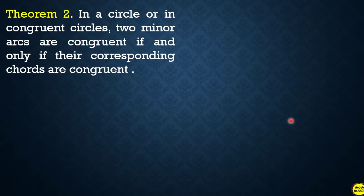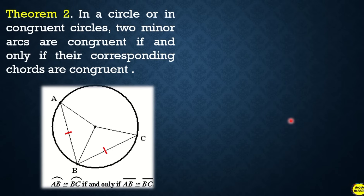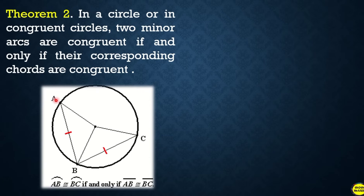For theorem number two: in a circle or in congruent circles, two minor arcs are congruent if and only if their corresponding chords are congruent. For example, if chord AB is equal to chord BC, then arc AB and arc BC are also equal. The arcs become equal when their corresponding chords are equal.